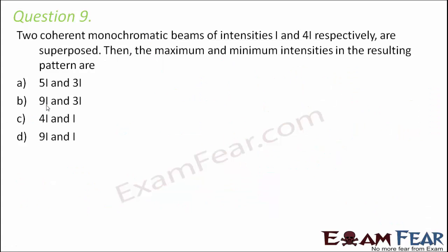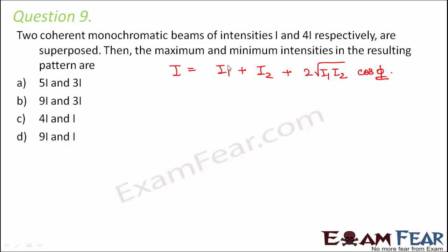Question Number 9. Two coherent monochromatic beams of intensities I and 4I respectively are superposed. We need to find the maximum and minimum intensities in the resultant pattern. We know that for two waves with intensities I₁ and I₂, the resultant intensity is I₁ + I₂ + 2√(I₁I₂) cos φ, where φ is the phase difference.